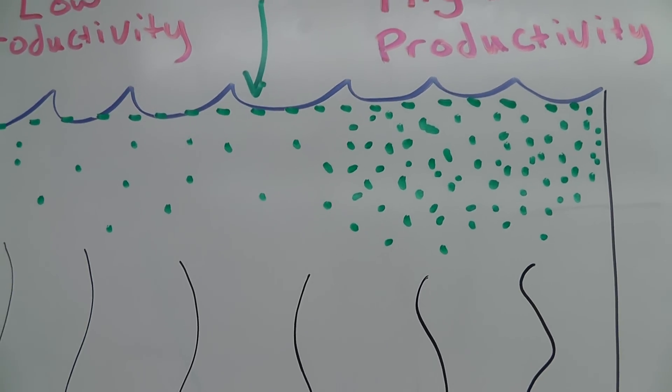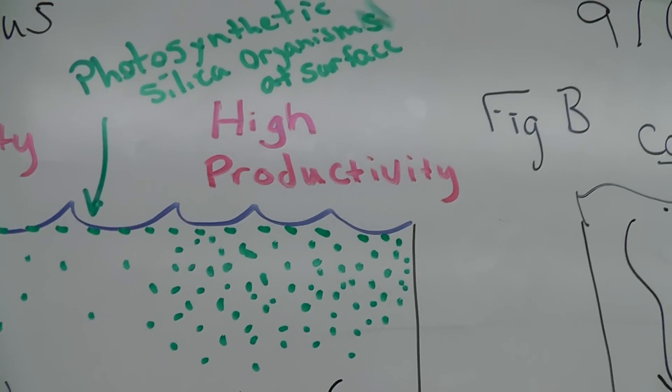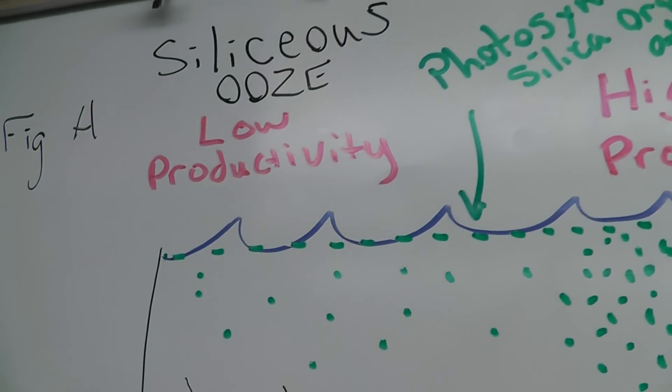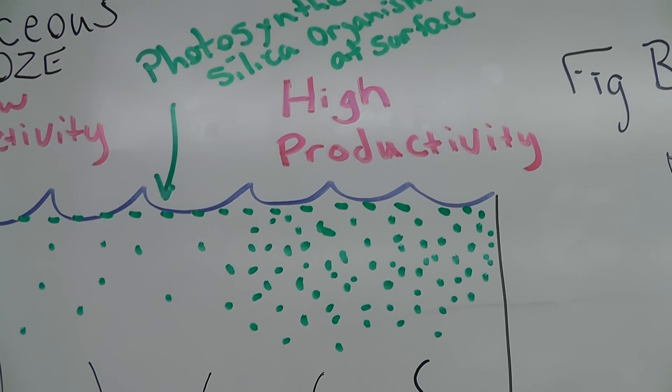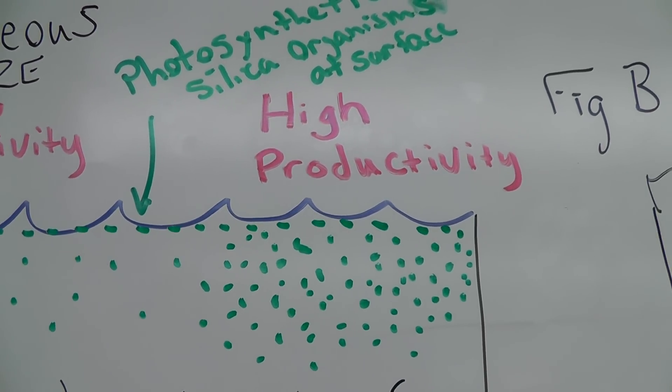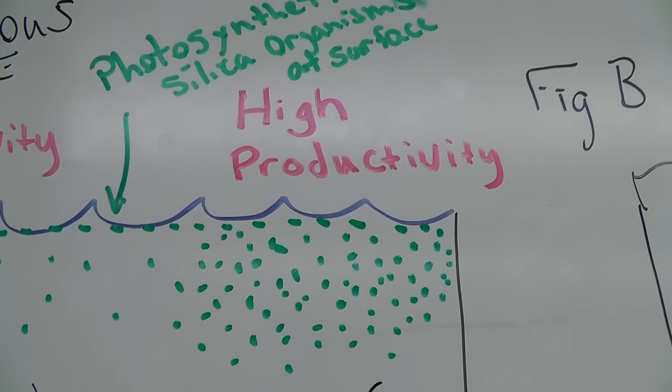Now we have two areas in this ocean that we're going to look at. We have an area of high productivity and we have an area of low productivity. So if we look at an area of high productivity we want to kind of understand why is that an area where there's a lot of silica producing organisms.